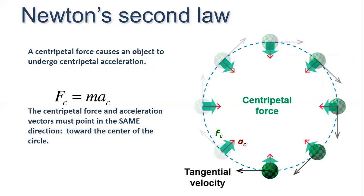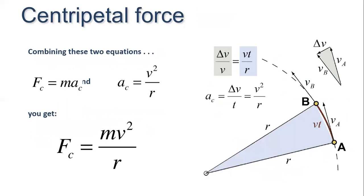The centripetal force and the acceleration vector must both point in the same direction — toward the center of the circle. From Newton's second law we write F = mac. Previously we derived ac = v²/r. Substituting, we get the equation for centripetal force: Fc = mv²/r.